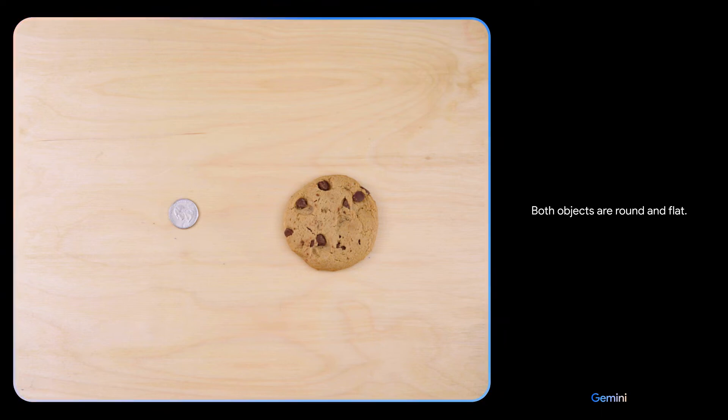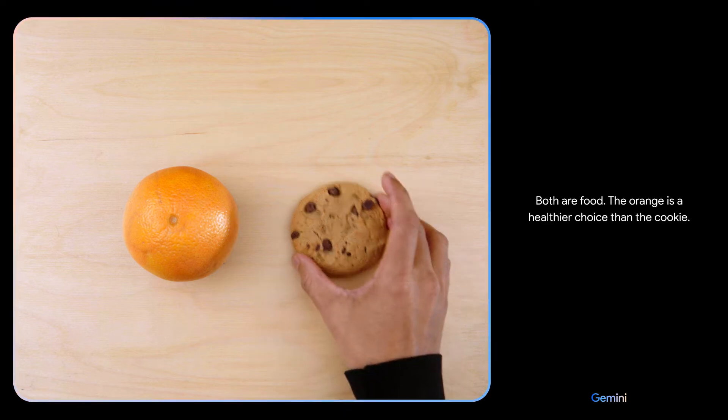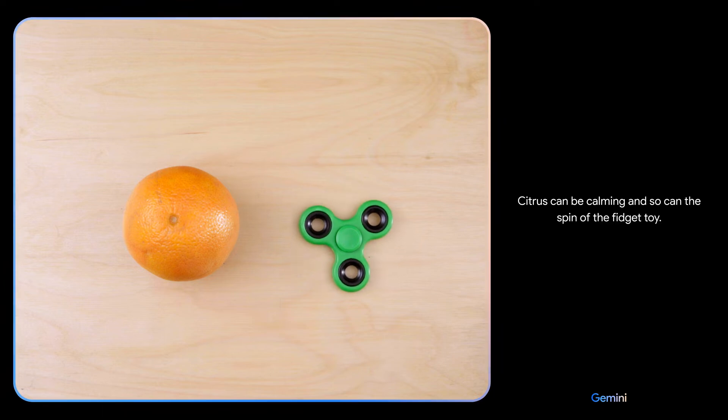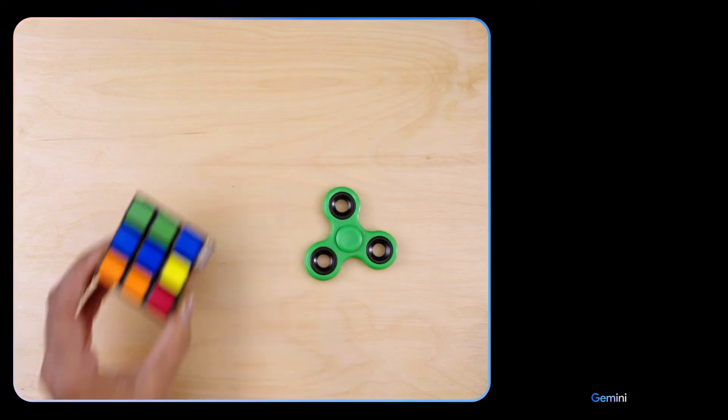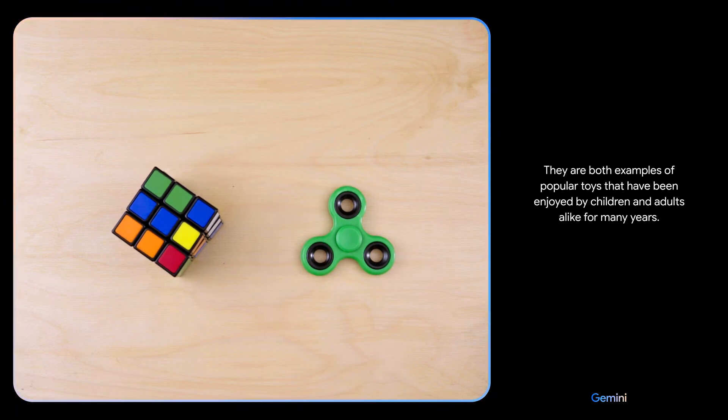Both objects are round and flat. There you go. Both are food. The orange is a healthier choice than the cookie. Citrus can be calming, and so can the spin of the fidget toy. They are both examples of popular toys that have been enjoyed by children and adults alike for many years.